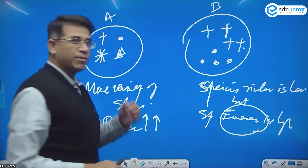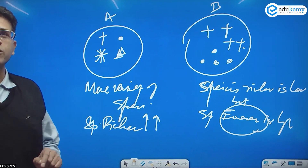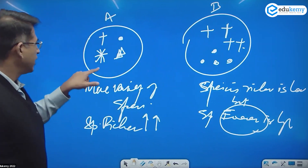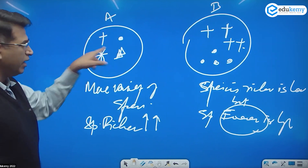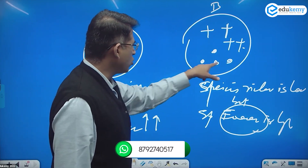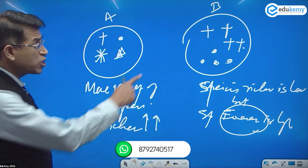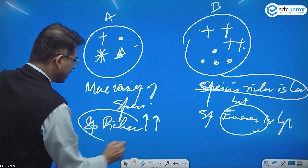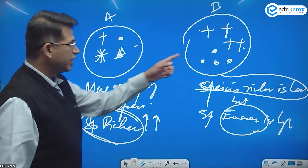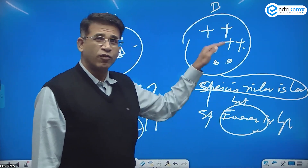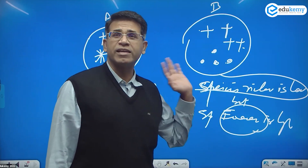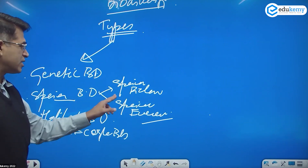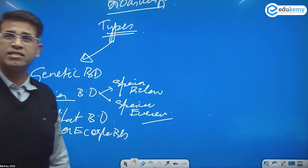Evenness ka matlab hota hai the number of the same species. So in area A there is only one cross, one dot, one star, one triangle. In area B there are four crosses and four dots. So richness is low in B. Comparing A and B: A ka richness high hai, evenness low hai. B mein richness low hai aur evenness high hai. I hope you understand the meaning of species richness and species evenness.